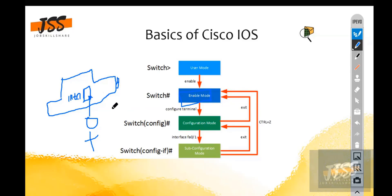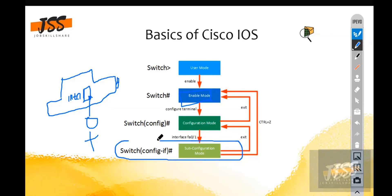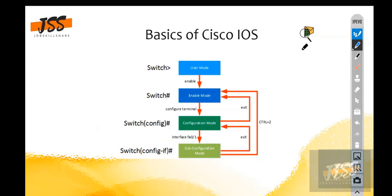Configuration mode is like you plug the key in and ignite or power on the car. After that you can run the car, change the gears, speed up or slow down, use the clutch and brakes - that is just like the sub-configuration mode. So that's a simple analogy. User mode is the very basic mode.